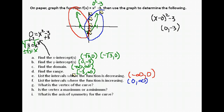Our vertex was at (0, -3). Is the vertex a maximum or a minimum? We can see that it's the low point on our graph. Also, the coefficient in front of x squared is positive, so it opens up and has a minimum value at its bottom. The axis of symmetry is always x equals the x-coordinate of the vertex, which here is x = 0 — the vertical line down the center of the parabola.